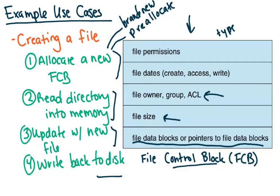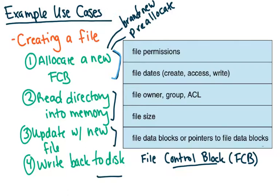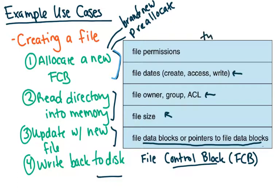One example use case is creating a file. The first thing you want to do is allocate a new file control block. A file control block looks something like a process control block or thread control block — it's just the file equivalent. It's going to hold metadata like permissions, dates of creation, owner groups, file size, and pointers to the data blocks of where it's actually sitting in storage. It's worth noting that Linux also keeps track of a type field here, because Linux treats directories like files, and this type distinguishes between a file and a directory.